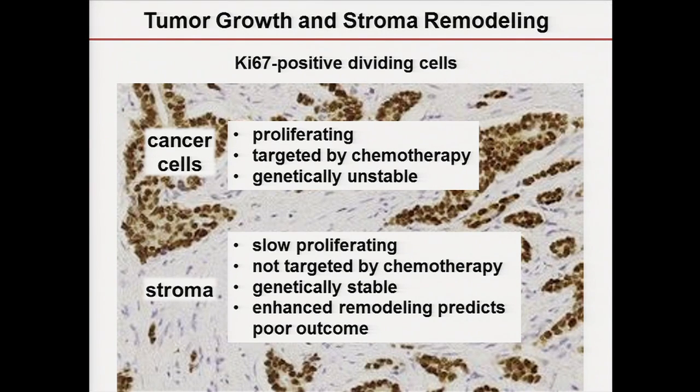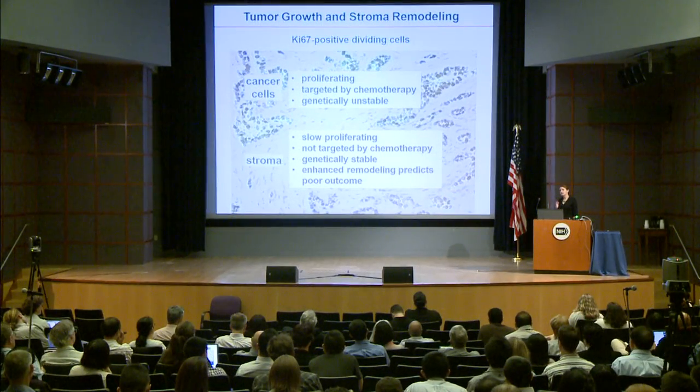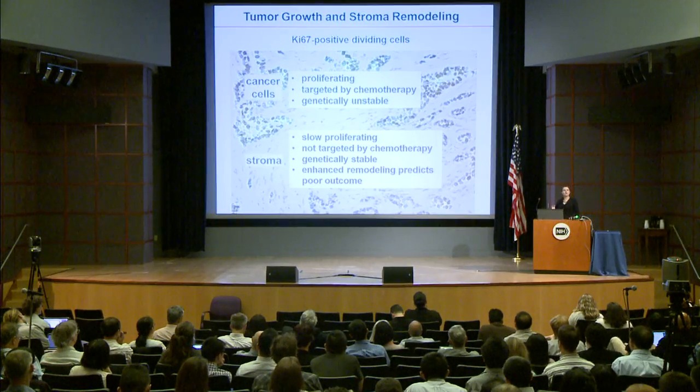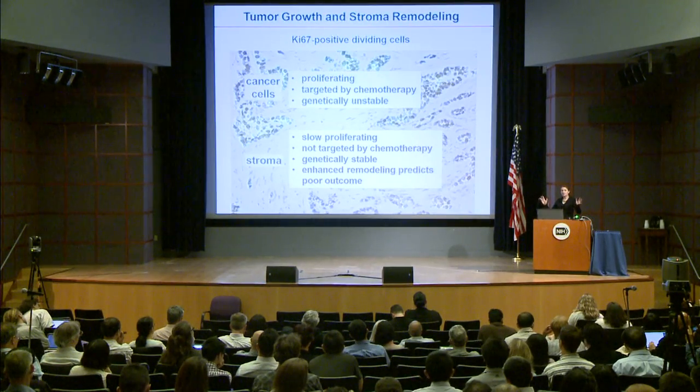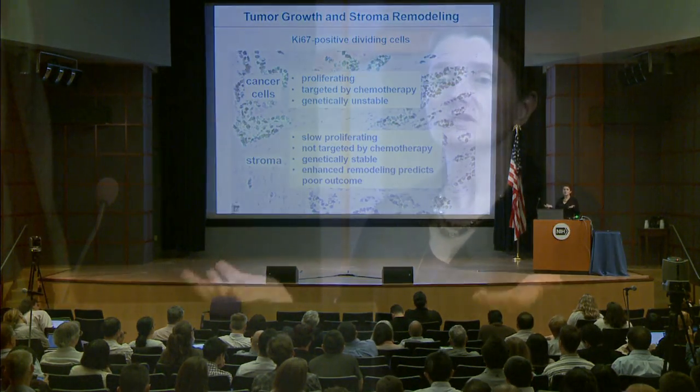We noticed that enhanced remodeling occurs in stroma during tumor progression. Study after study over the past five to ten years has shown that if you compare cancers and try to find on the expression level what genes predict poor survival, most likely you will end up with genes that are expressed not in cancer cells but in the stroma. That tells us there is something in the stroma that is very important and that predicts — or maybe actually contributes to — poor survival.